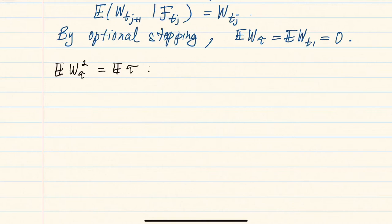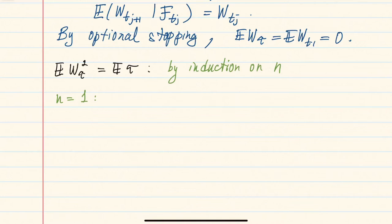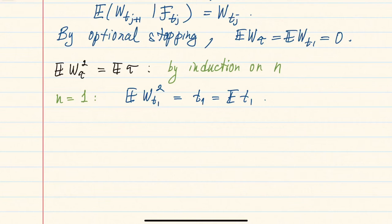This will be proved by induction on n. When n equals 1, this is just part of the definition of Brownian motion: the expectation of W_t squared, or its variance, is just t, which is of course just the expectation of this constant stopping time. So the only thing we need to show is the induction step from n−1 to n.